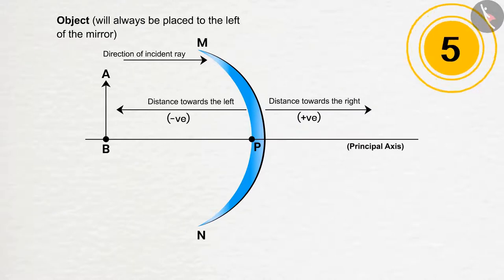5. The distances perpendicular to and above the main axis will be positive, and the distances below will be negative.